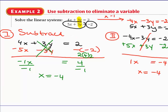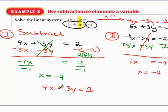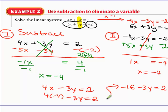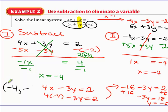It doesn't matter whether you subtract or add — just be careful with subtracting a negative when using the subtraction method. Now we need to solve for y. Substitute x = negative 4 into one of the equations. You get negative 16 minus 3y = 2. Add 16: negative 3y = 18, so y = negative 6. The answer is (negative 4, negative 6).